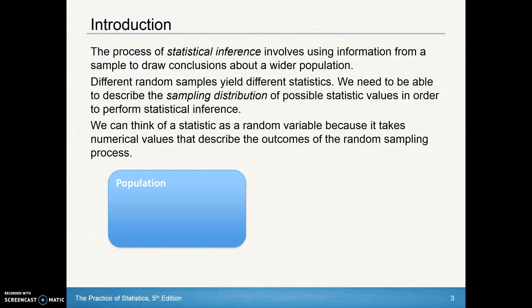So your x-bar was different than somebody else's x-bar. And we need to be able to describe the sampling distribution. So if we put all of those x-bars that each different person collected together, we need a way to describe that sampling distribution of possible statistic values in order to perform statistical inference. We can think of a statistic as a random variable because it takes numerical values that describe the outcomes of the random sampling process.